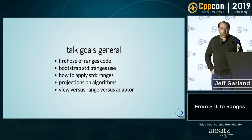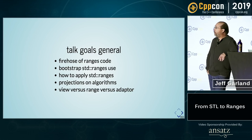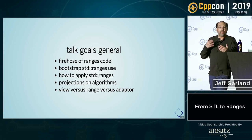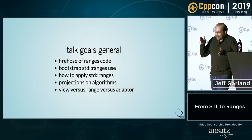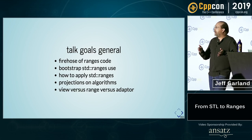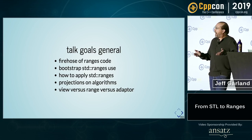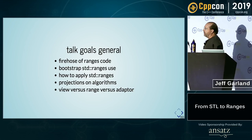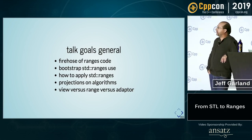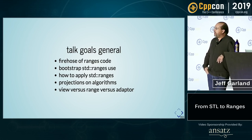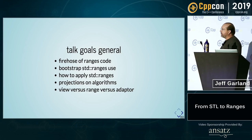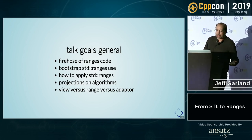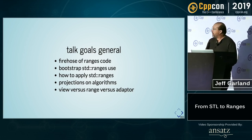What are the goals of this talk? I'm going to give you a lot of range code today — you're going to see a lot of what's going to be in standard ranges in C++20. We'll talk about some things on how to apply it. Even though I think I accidentally said this was intermediate to advanced, it's probably more beginner-intermediate. I'm not going to show you some super complicated, crazy examples. Because reality is that 90% of your uses are going to be very straightforward and simple. We'll also talk about projections on algorithms, and what's a range versus a view versus an adapter — those are fundamental concepts in using this library.